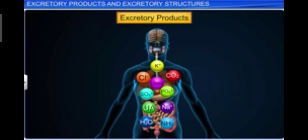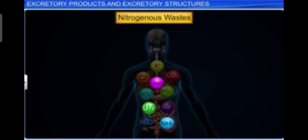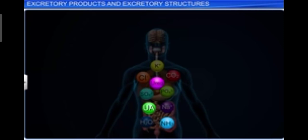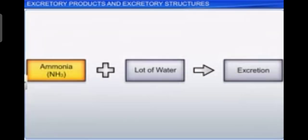Among different waste products, ammonia, urea, and uric acid are the major forms of nitrogenous waste excreted by animals. Ammonia is the most toxic form and requires a large amount of water for its elimination, whereas uric acid, being the least toxic, can be removed with a minimum loss of water.